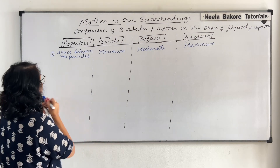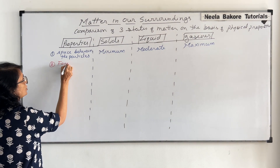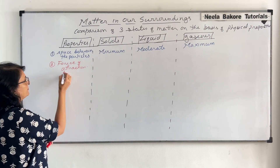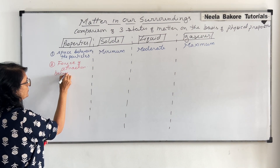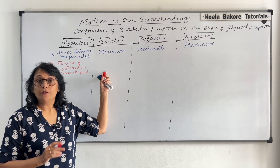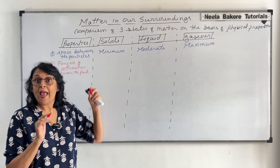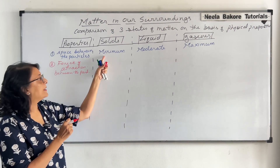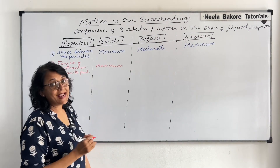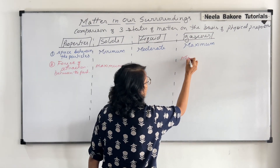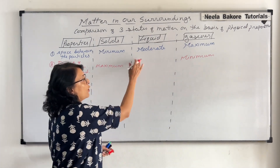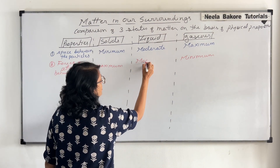The second property is the force of attraction between the particles. In case of solids, the force of attraction is maximum, and that is why the particles are so close to each other that there is no space. In gases, it is minimum, and that is why the particles are so spaced out. In liquids, it is again moderate — in between the two.